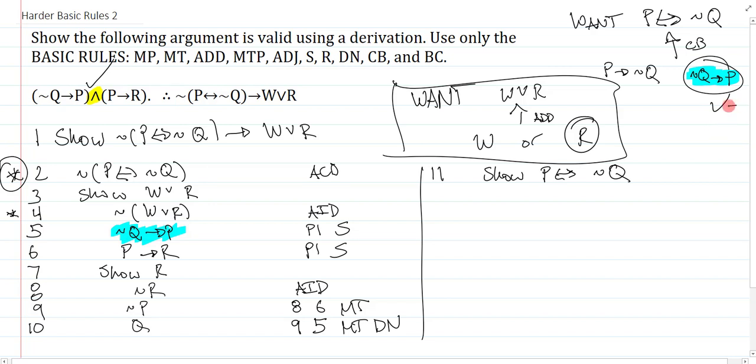So the only thing I'm missing is P arrow not Q. So how do I get P arrow not Q? Well, if you want something, show it. So I'm going to immediately write show P arrow not Q, and I proceed.